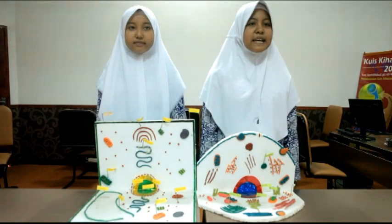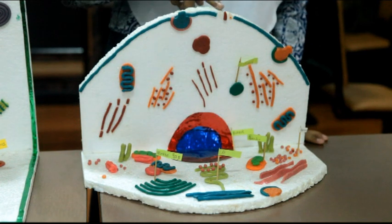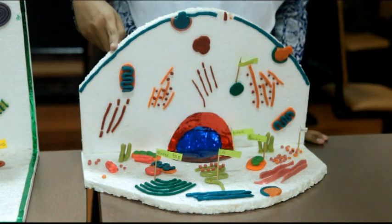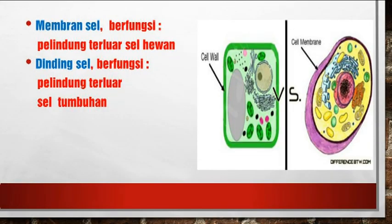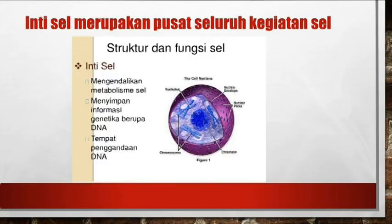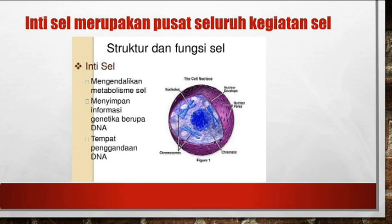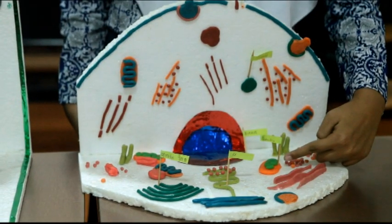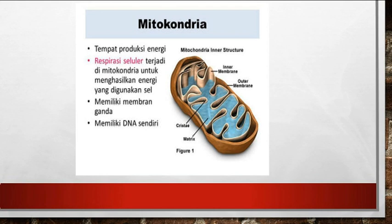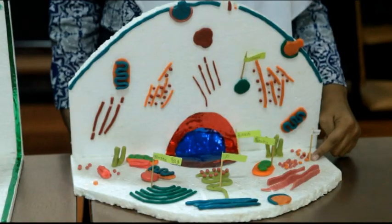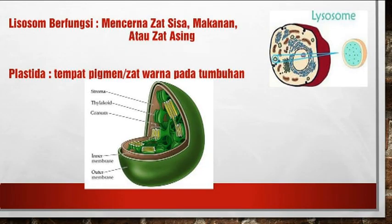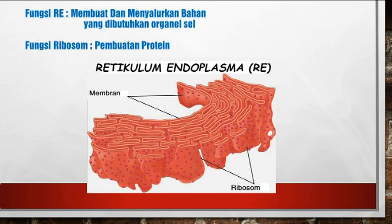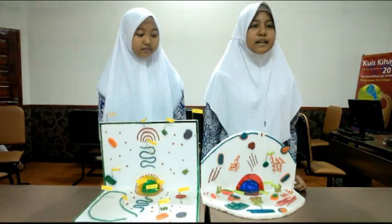Di sini saya akan menjelaskan tentang bagian-bagian dari sel hewan. Yang pertama, bagian terluar dari sel hewan adalah membran sel, berfungsi sebagai pengatur keluar masuknya zat. Yang kedua, nukleus atau inti sel, berfungsi sebagai pengatur semua aktivitas sel. Yang ketiga, mitokondria, berfungsi dalam respirasi sel. Yang keempat, ribosom, berfungsi untuk sintesis protein. Yang kelima, retikulum endoplasma, berperan dalam transport zat intrasel.